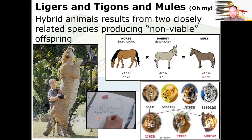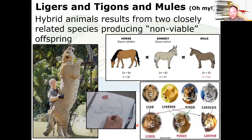A very similar thing happens with lions, tigers, and leopards — they're all big cats, close enough evolutionarily to interbreed, but the offspring are sterile hybrids. This is a liger, made famous in Napoleon Dynamite. Leopards and lions can breed to make a leopon. These animals are not viable though — they're sterile. When that liger dies, there are no more ligers in that lineage.